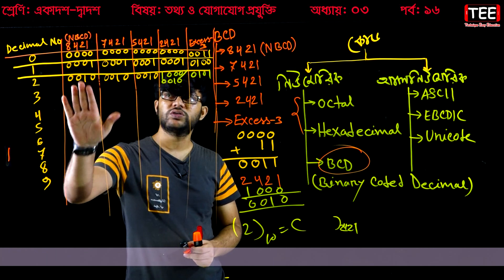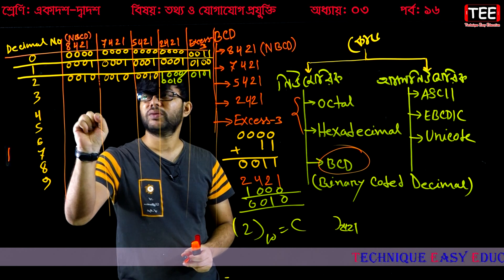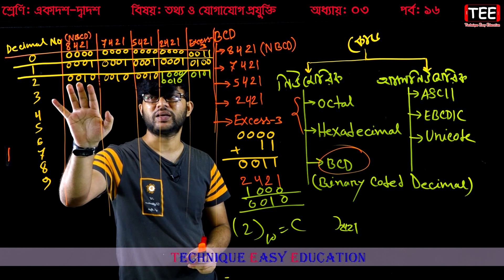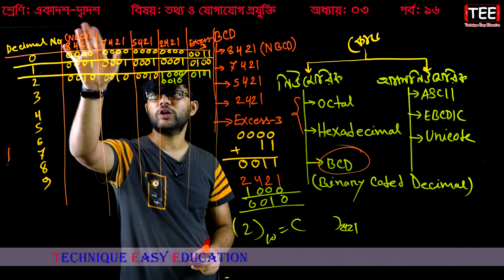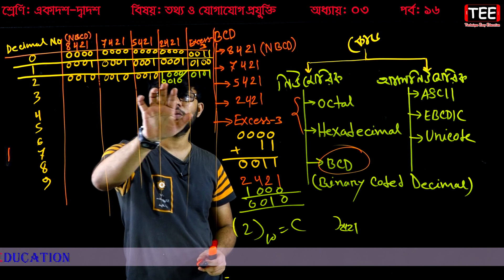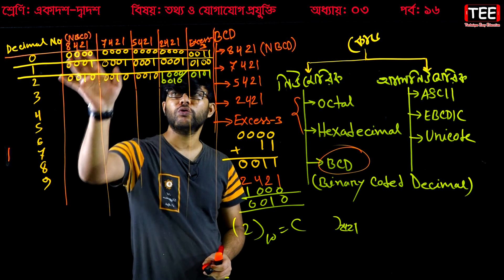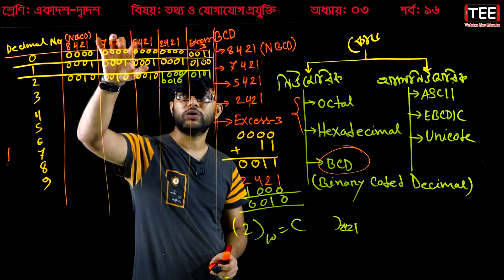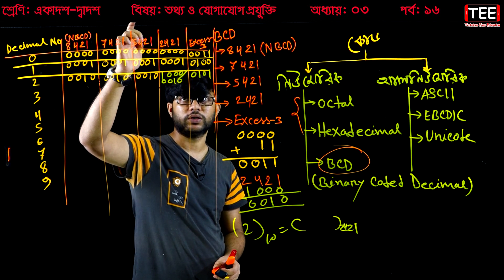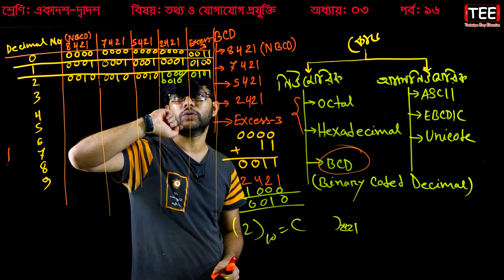This is a non-weighted code — there is no weighted binary involved. It means there is a non-weighted binary representation. This is a non-weighted code that we represent, which looks like non-weighted binary.